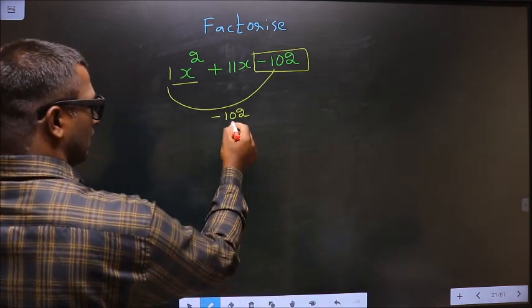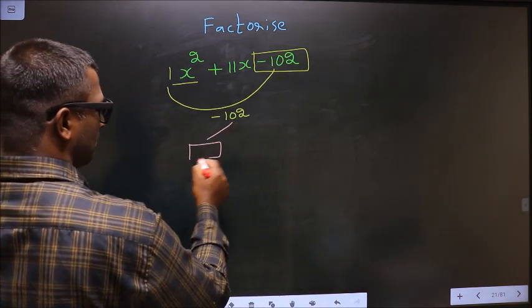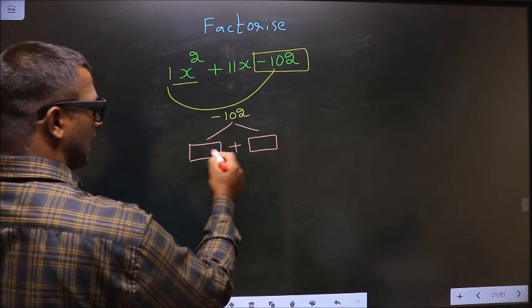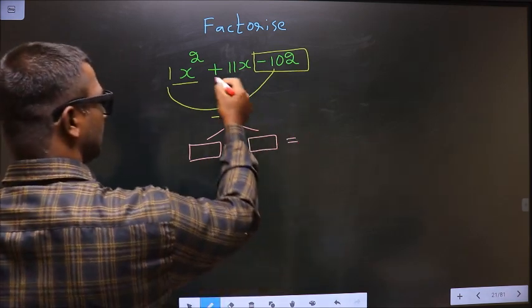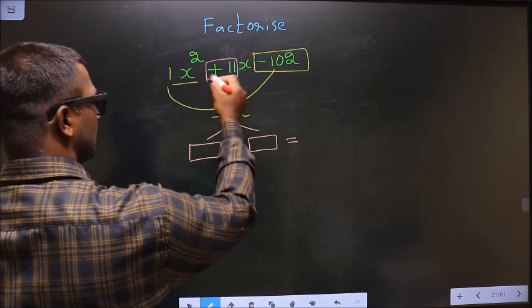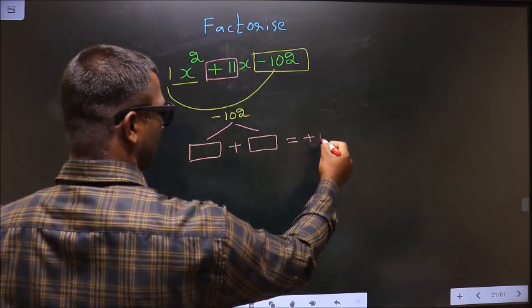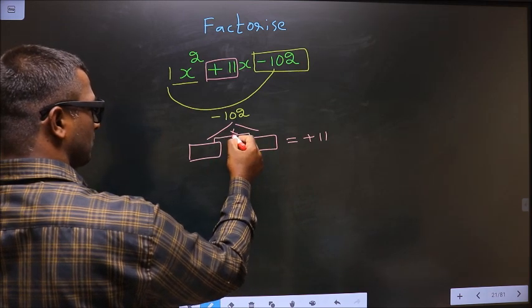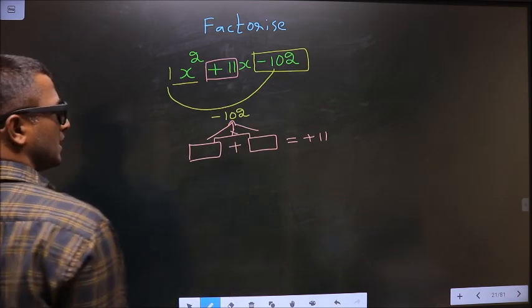Now you should look out for two numbers such that when you add these two numbers you should get the middle coefficient, which is plus 11, and also when you multiply these two you should get minus 102.